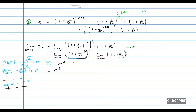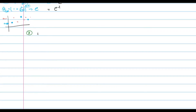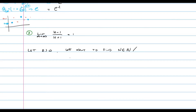Now we're going to solve two exercises using the definition of a limit. We want to prove that the limit of n minus 1 divided by n plus 1 equals 1. Let epsilon be a number greater than 0. We want to find a natural number N such that the absolute value of n minus 1 over n plus 1 minus 1 is smaller than epsilon for all natural numbers n greater than or equal to N.